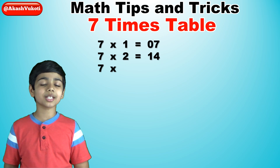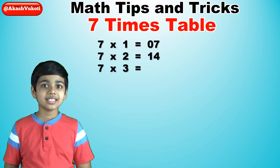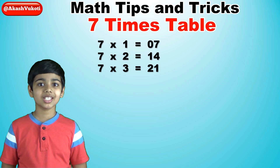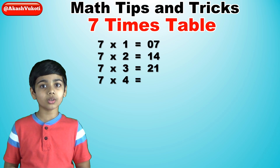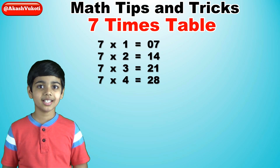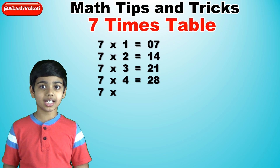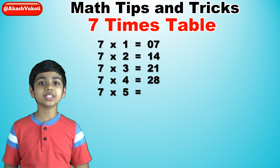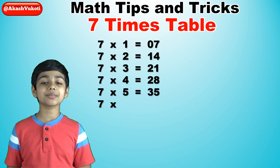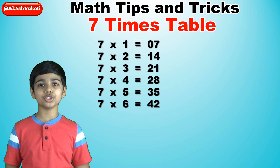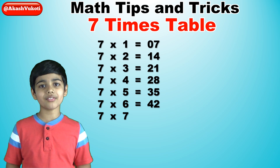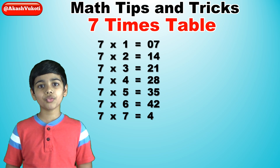Seven times three is twenty-one. Seven times four is twenty-eight. Seven times five is thirty-five. Seven times six is forty-two. Seven times seven is forty-nine.